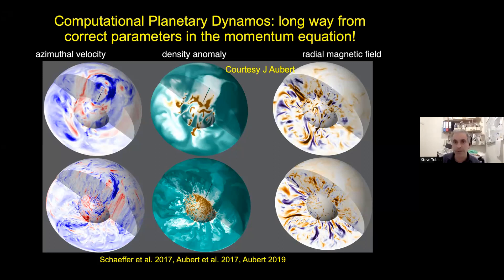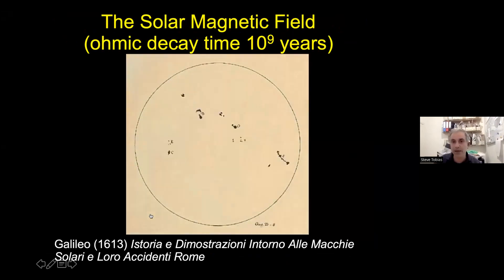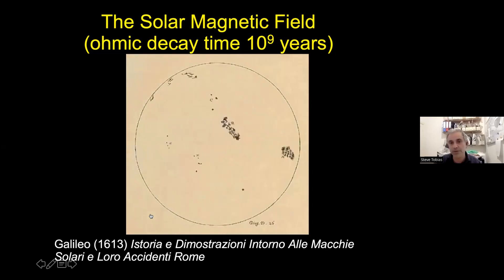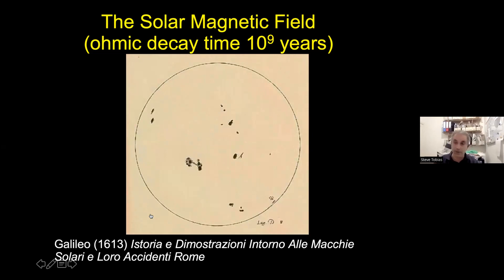Let me move on to what I really want to talk about, which is stars. The sun's magnetic field has an ohmic decay time of about 10 to the 9 years. These are some early pictures from Galileo, who used the telescope to do sunspot drawings. If you put them together, you get a movie showing the sun rotating with dark patches on the surface, which are manifestations of the underlying magnetic field. These dark patches are dark because the magnetic field inhibits the convection.